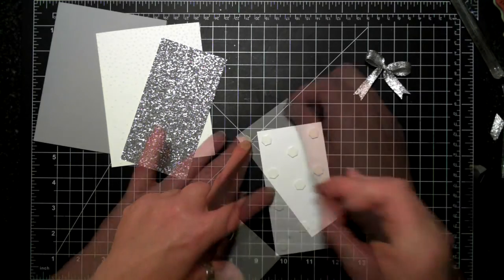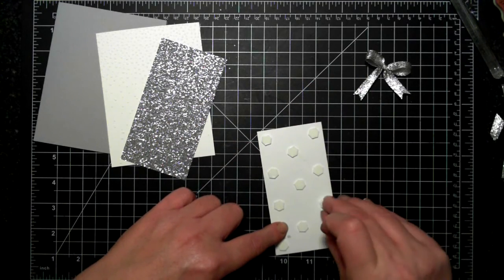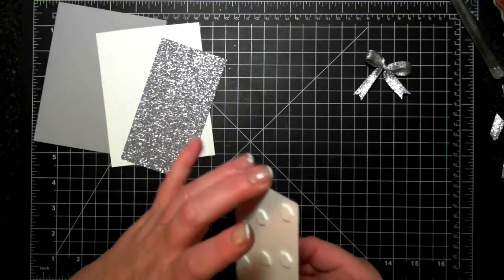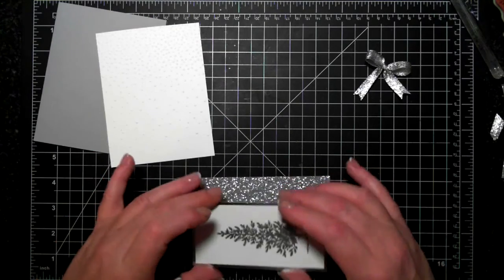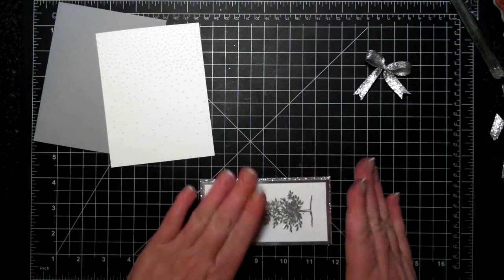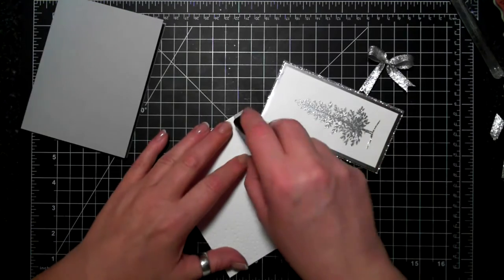You can see I'm overachieving here at the moment, and I'm putting that lovely tree on the silver glimmer paper.